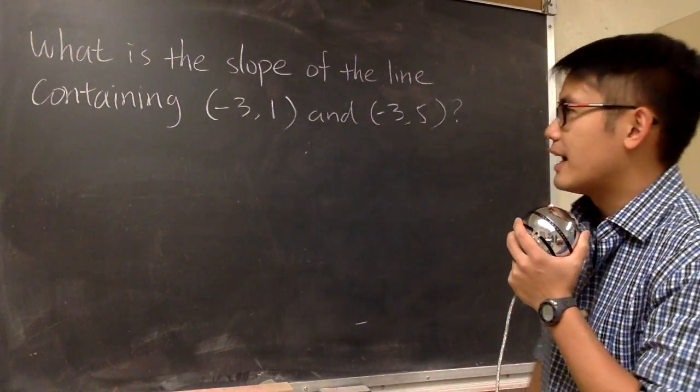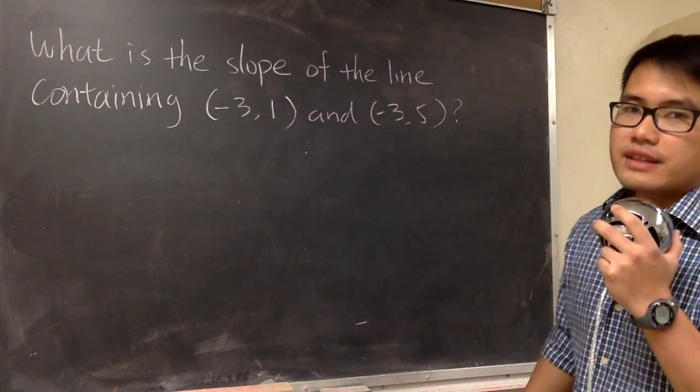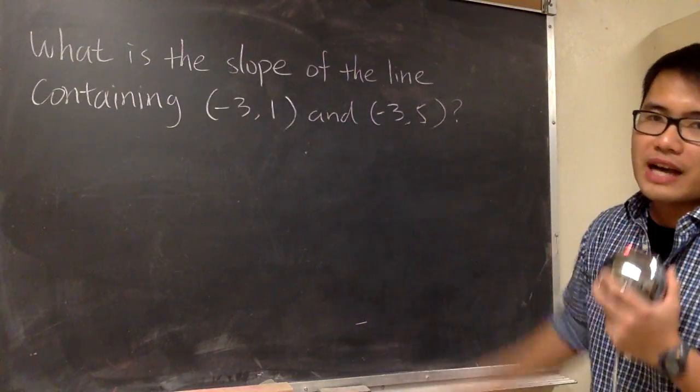Okay, we're going to find the slope of the line that has these two points. The first one is (-3, 1), and then the second point is (-3, 5).